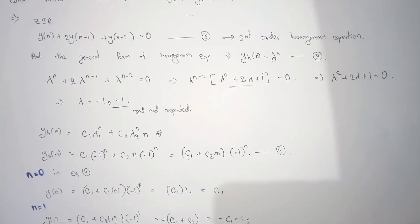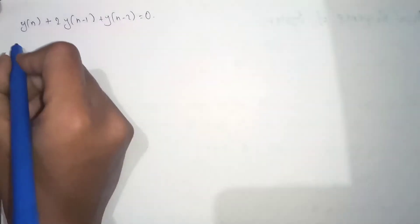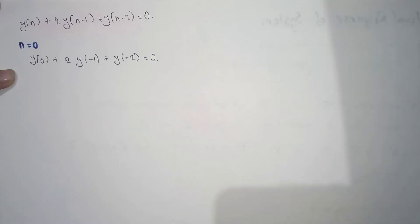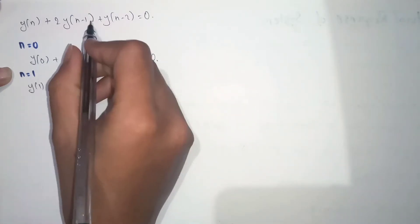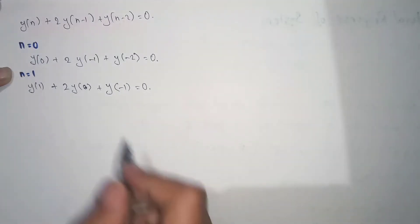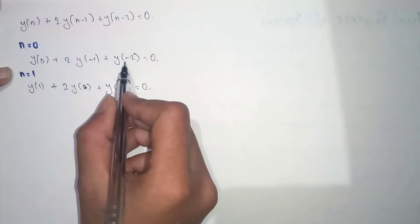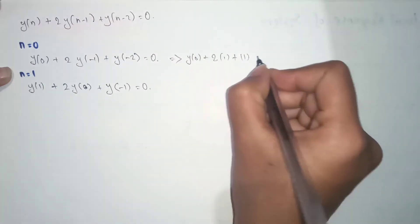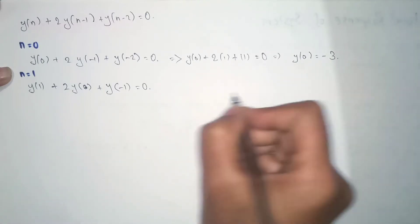Now we will substitute n = 0 and n = 1 into the original equation (equation 2) to find y(0) and y(1). Substituting n = 0: y(0) + 2·y(-1) + y(-2) = 0. Using the given initial conditions for y(-1) and y(-2), we substitute those values: 2·1 + 1 = 0, so y(0) = -3.